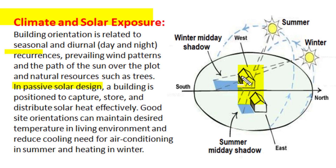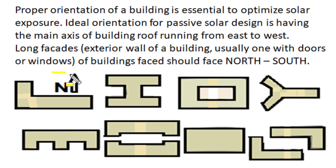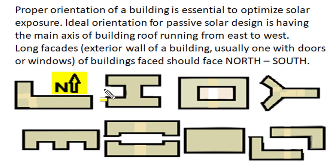Good site orientation can maintain desired temperature conditioning in the living area, provide a comfortable living environment, and reduce cooling needs of air conditioning in summer and heating needs in winter. Proper orientation with respect to cardinal direction is essential to optimize solar exposure. The ideal orientation for passive solar design is having the main axis of the building roof running normal to the north-south direction — that is, along the east-to-west direction.